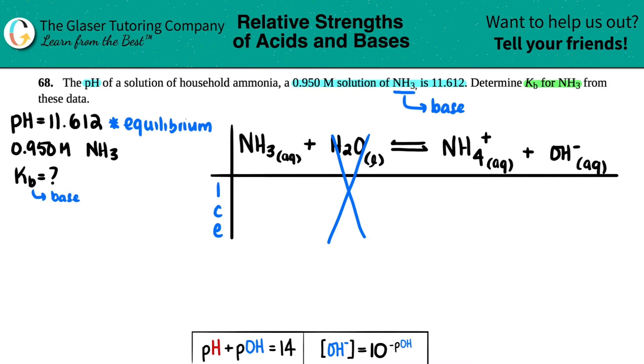Now, I stands for initial. Did they tell us an initial concentration of the ammonia? Yes, they did. 0.950 molar solution. So that's going to go here, 0.950 molarity. Now, did they tell us if we started off with any ammonium or hydroxide? No. This pH value is not a concentration. This is literally the only concentration that they gave us, and that's towards the ammonia. So we didn't start with any of these products. So 0 and 0.